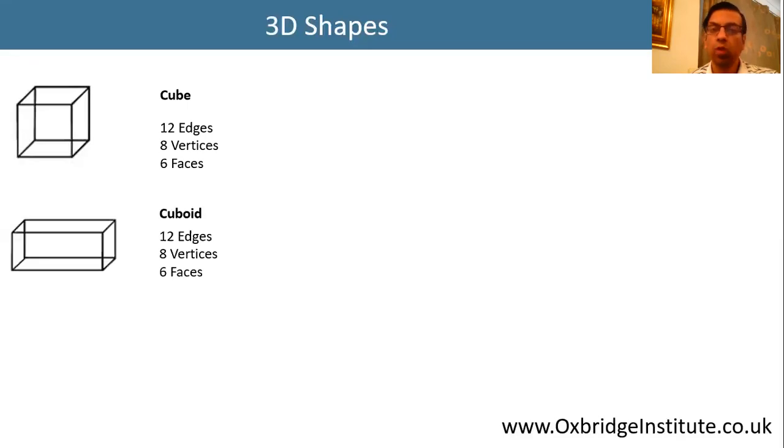Similarly, a cuboid also has 12 edges, 8 vertices, and 6 faces.